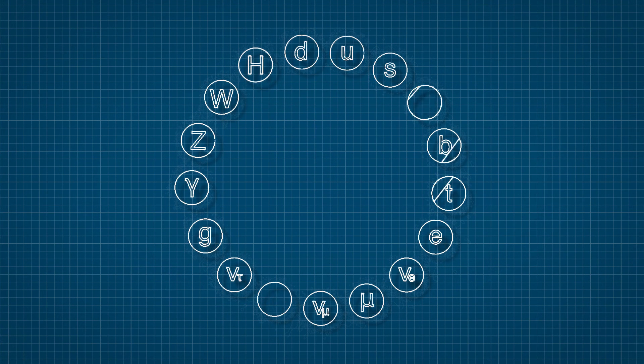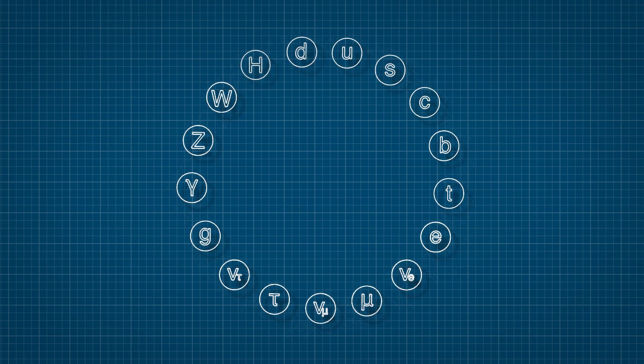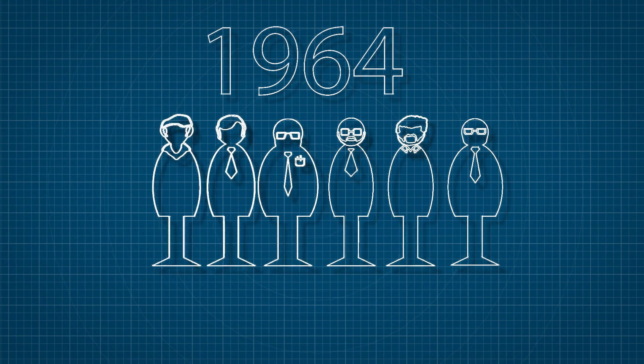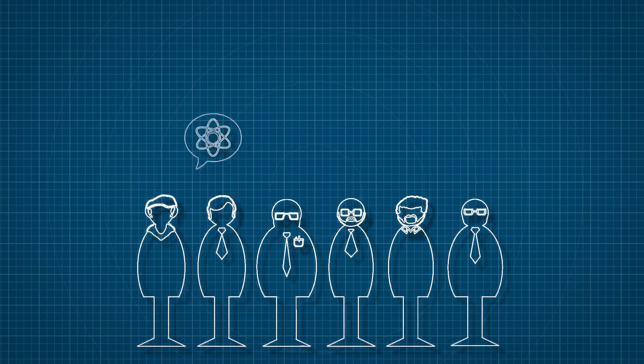Now you might be wondering how in the world scientists were able to discover such a thing. In 1964, a group of scientists including Peter Higgs proposed the idea of a mechanism that would suggest the existence of the Higgs particle.